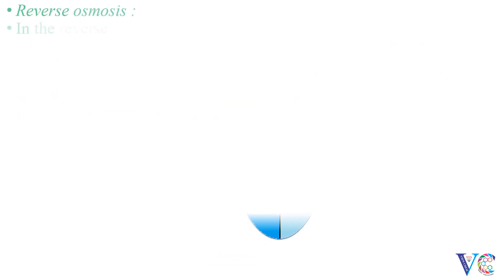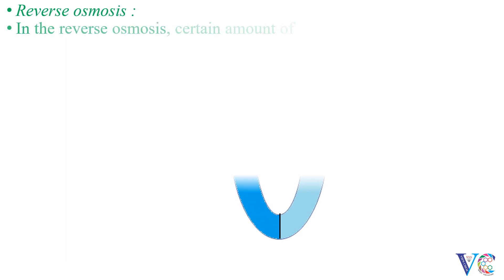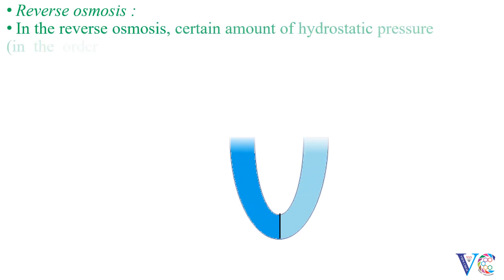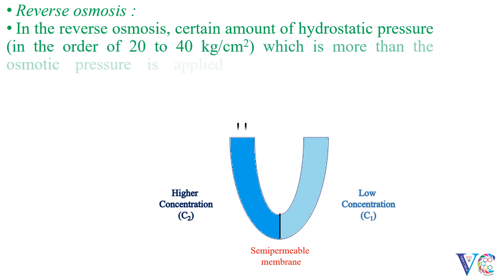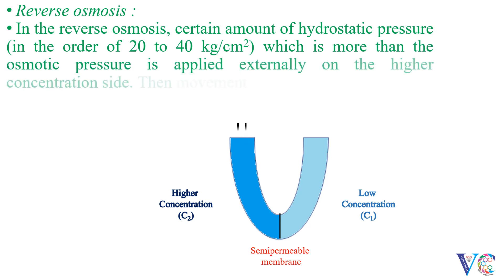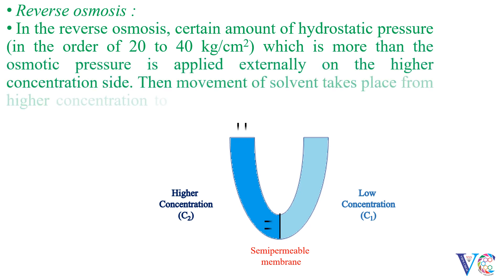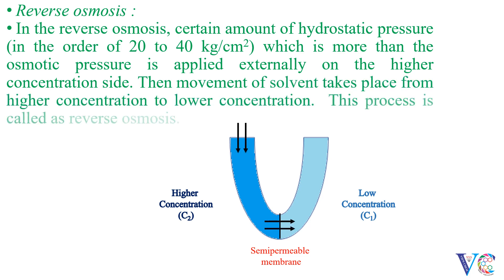Reverse osmosis: in reverse osmosis, a certain amount of hydrostatic pressure in the order of 20–40 kg per cm² — which is more than the osmotic pressure — is applied externally on the higher concentration side. Then the movement of solvent takes place from higher concentration to lower concentration. This process is called reverse osmosis.